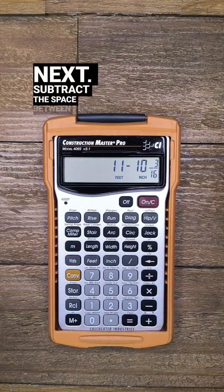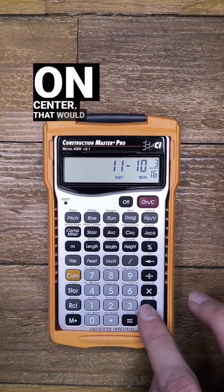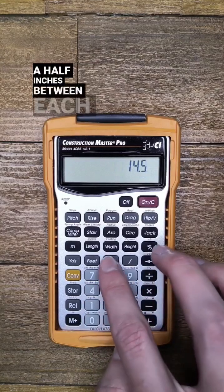Next subtract the space between your rafters. For 16 inches on center, that would be 14 and a half inches between each rafter.